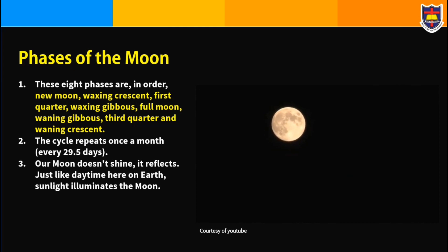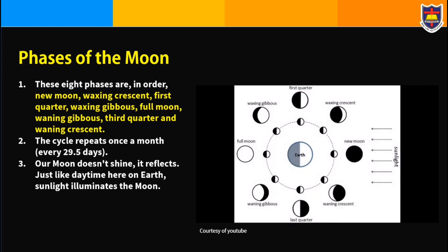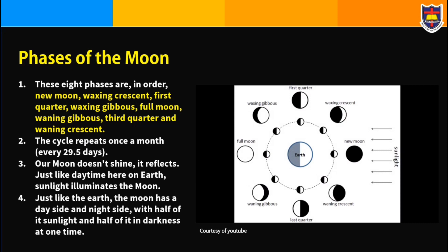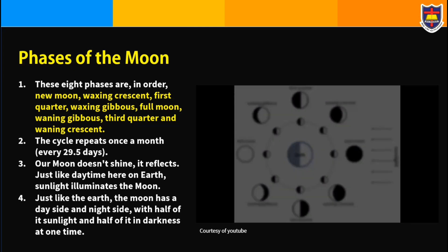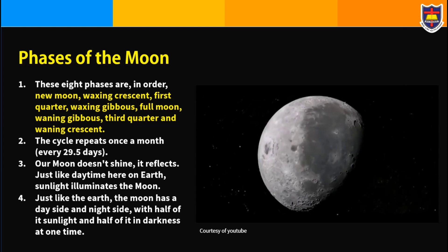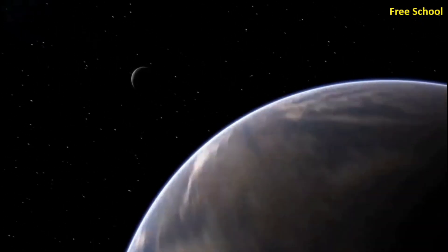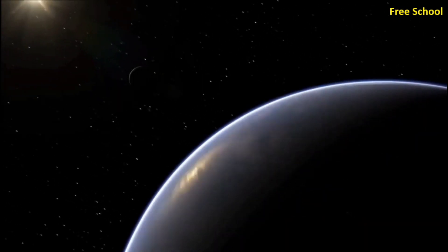Our moon doesn't shine — it reflects light. Just like daytime here on Earth, sunlight illuminates the moon. The moon has a day side and a night side, with half of it in sunlight and half in darkness at one time. The cycle of moon phases begins with the new moon.